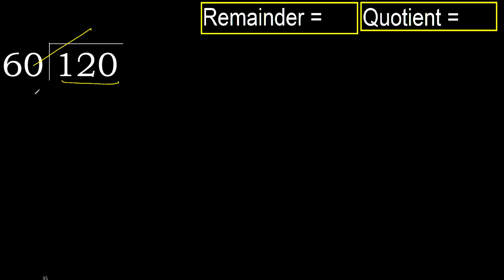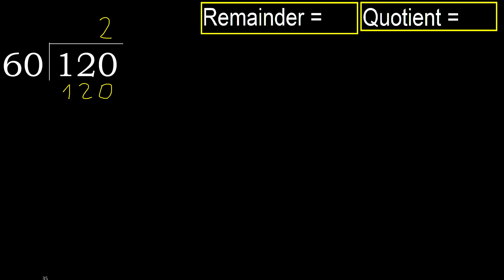60 multiplied by 3 is 180, which is greater. Multiply by 2: 120 is not greater, ok. Subtract 120 minus 120 equals 0.